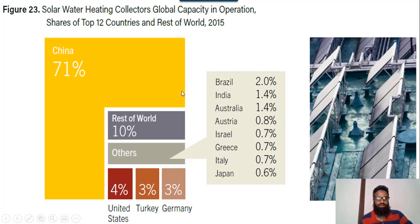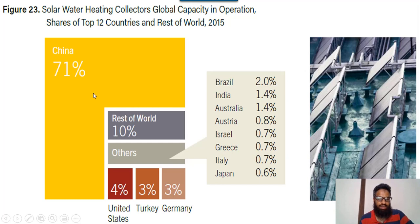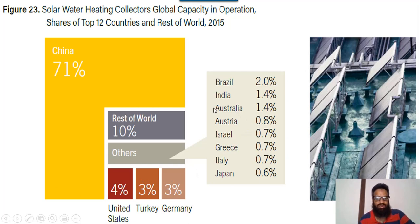If we compare country-wise percentages, 71 percent of water heating is used by China, and the remaining rest of the world is using 10 percent. Other countries like India, Australia, Austria, Israel, and Greece are using very lesser amounts.